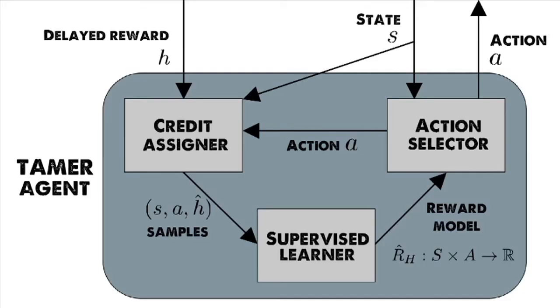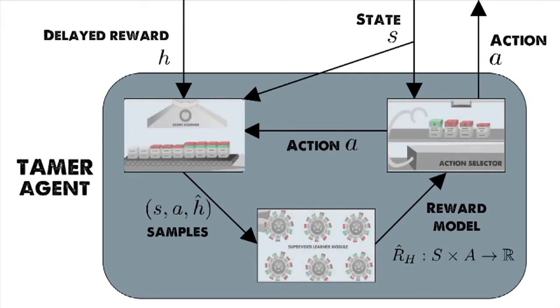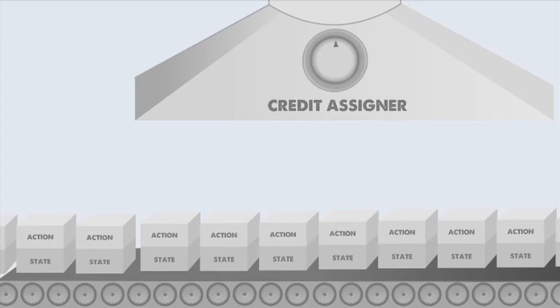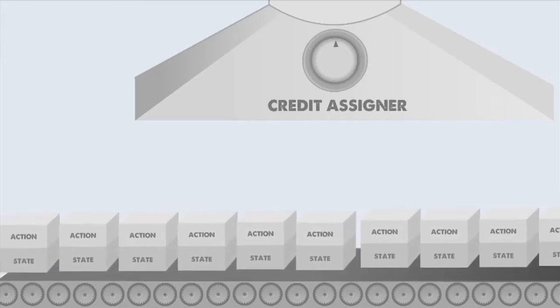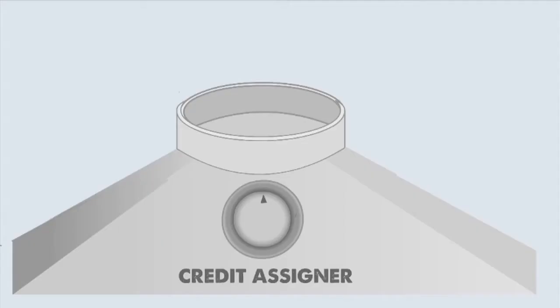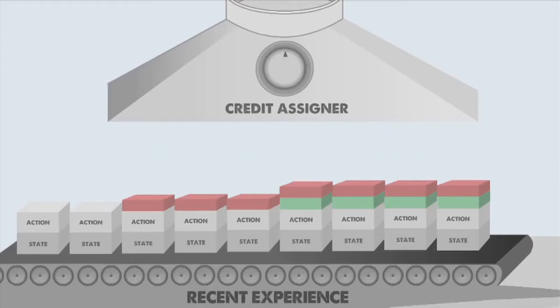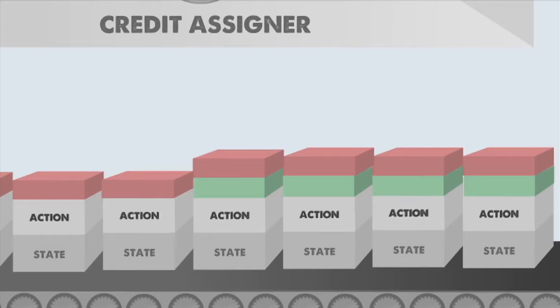The TAMER agent acts and learns through a series of three modules. After a state and action are experienced, they are remembered by the credit assigner module for a short period of time. This credit assigner module receives reward signals and divides credit for each signal among recent pairs of states and actions taken.